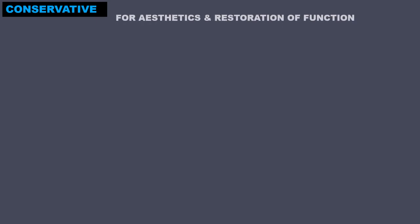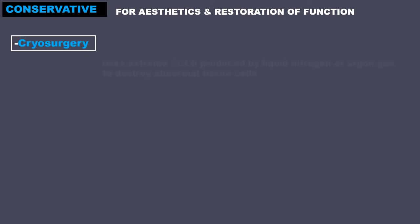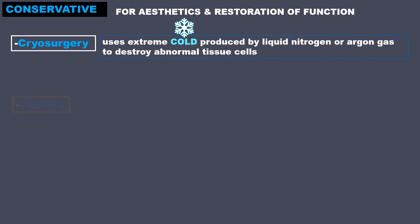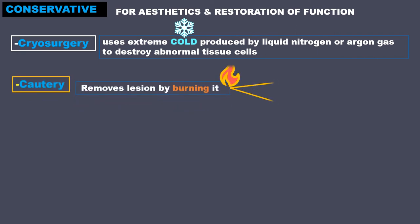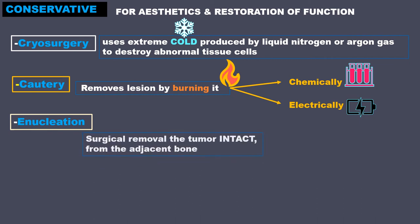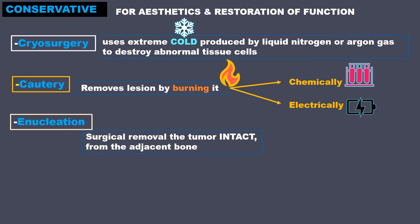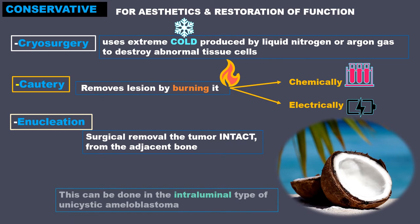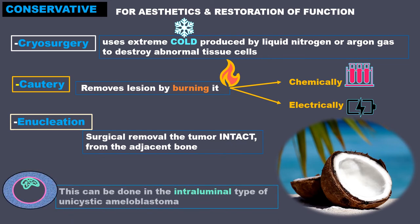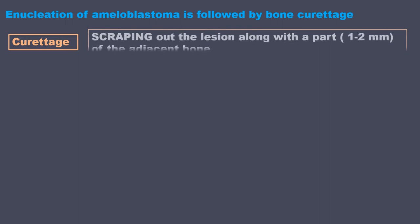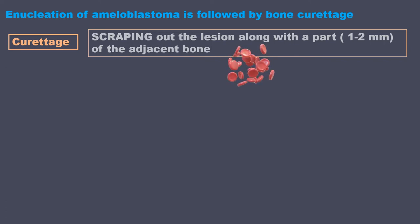Conservative treatment focuses on aesthetics and restoration of function. Under this we have cryosurgery, which uses extreme cold produced by liquid nitrogen or argon gas to destroy abnormal tissue cells. Then there is cautery, which removes the lesion by burning it — chemically or electrically. Enucleation is the surgical removal of the whole tumor intact from the adjacent bone — like removing the white of a coconut intact without leaving any bit in the shell. This can be done for the intraluminal type of unicystic ameloblastomas, and is followed by bone curettage.